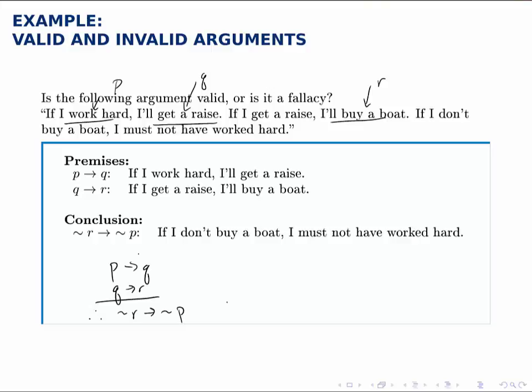From the first two premises we could think P implies Q and Q implies R. We know that it's valid then to say P implies R, that's transitive reasoning.